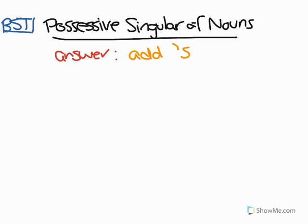This makes sense for a word like 'tree.' The possessive singular of tree is tree's, and this is what we would normally do — you would say 'a tree's leaves.'